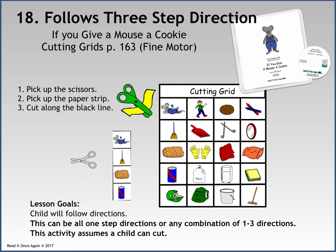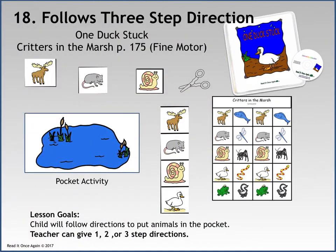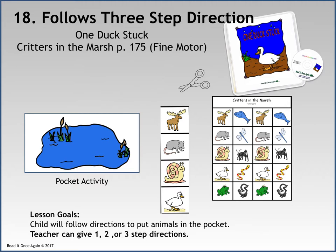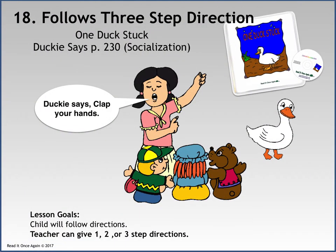Just about all activities require the child to follow directions — essential for success in a 4- or 5-year-old classroom. A fine motor activity from If You Give a Mouse a Cookie gives children directions for cutting along a one-inch line. All Level 1 units contain a pocket activity with a cutting grid providing one-inch squares with animals, characters, or objects from the story. The Critters in the Marsh activity from One Duck Stuck provides teachers the opportunity to have children follow a variety of directions, such as: put one moose, one possum, and one snail in the marsh pocket; or put something green, something blue, something brown in the pocket. Ducky Says, a game similar to Simon Says from One Duck Stuck, gives the teacher the opportunity to ask children to follow one, two, or three-step directions.